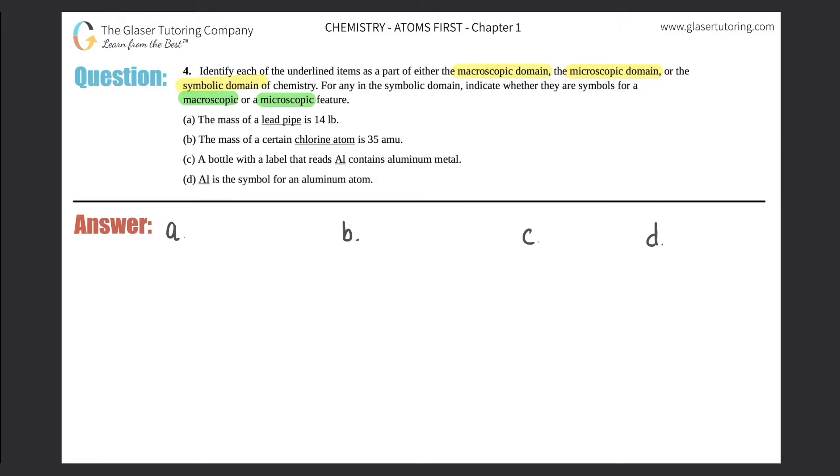Before we get into it, let's quickly describe what these three domains are: macroscopic, microscopic, and symbolic. Macroscopic domain: anything that's in a macroscopic domain is stuff that we can see with the naked eye, literally stuff that we can see.